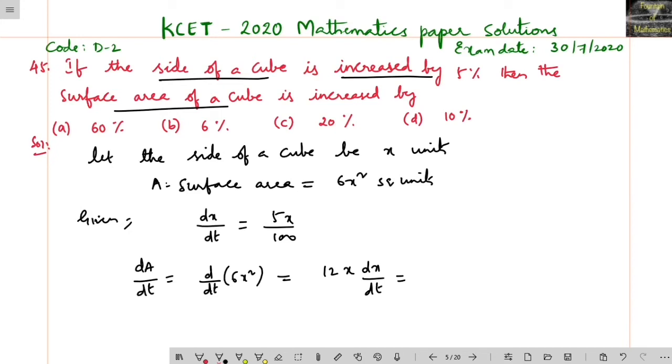That is 12x into dx/dt, which is 5x/100. This gives us 60x²/100, or 10/100 into 6x², because I want to find how much the area is increasing.